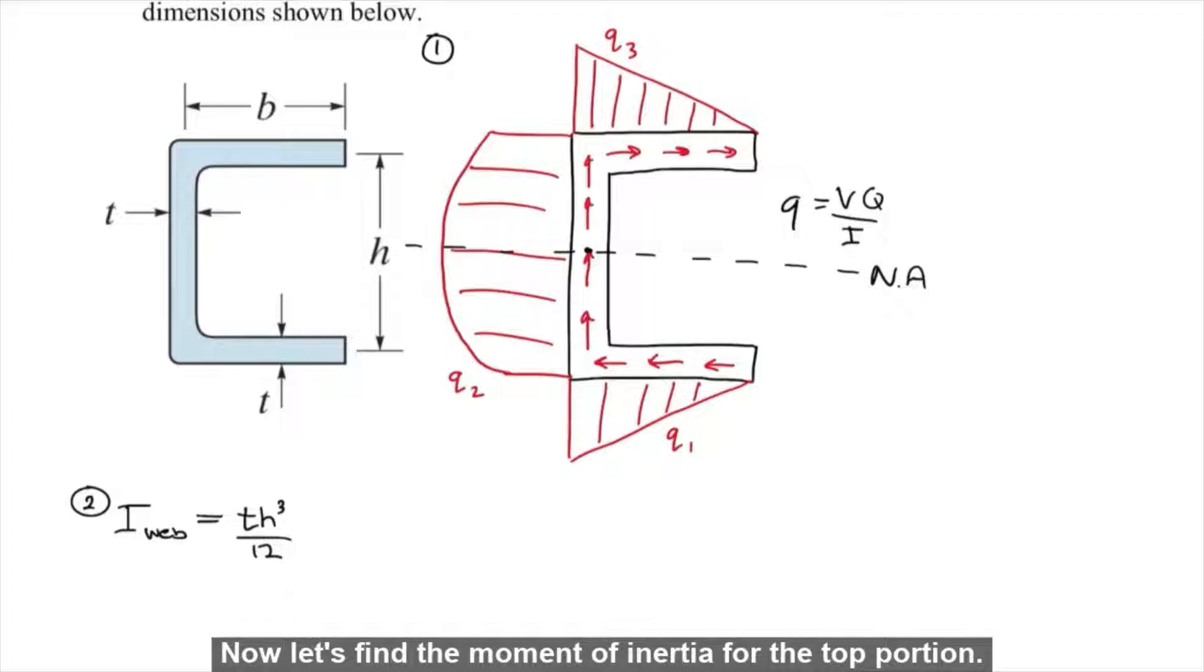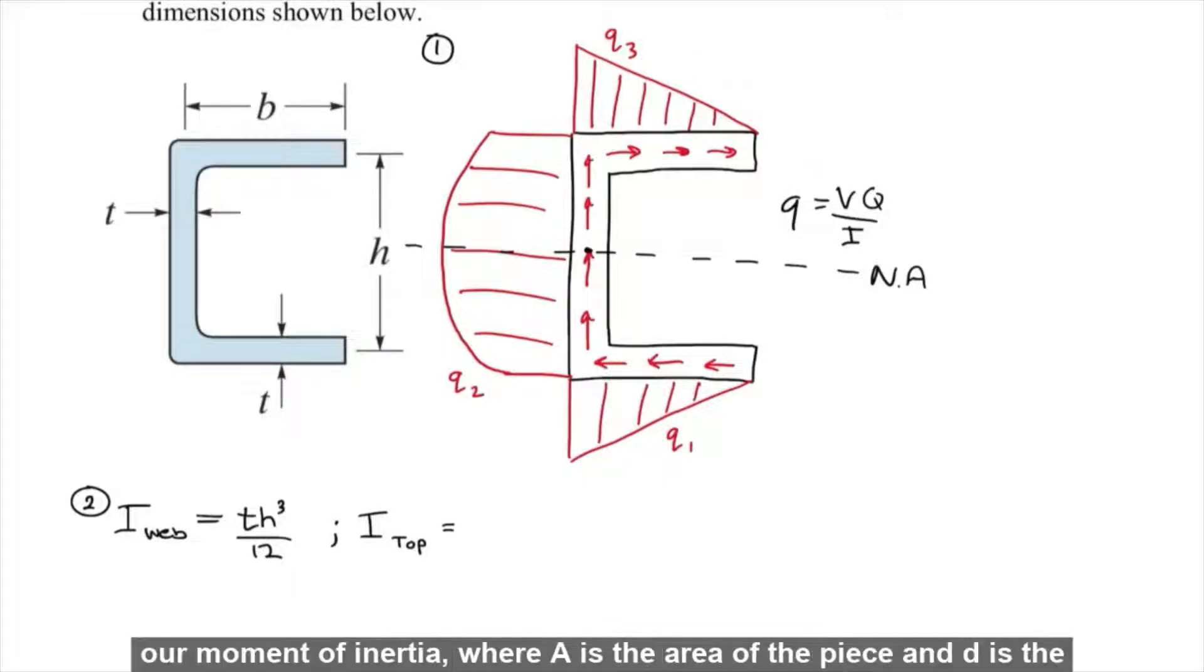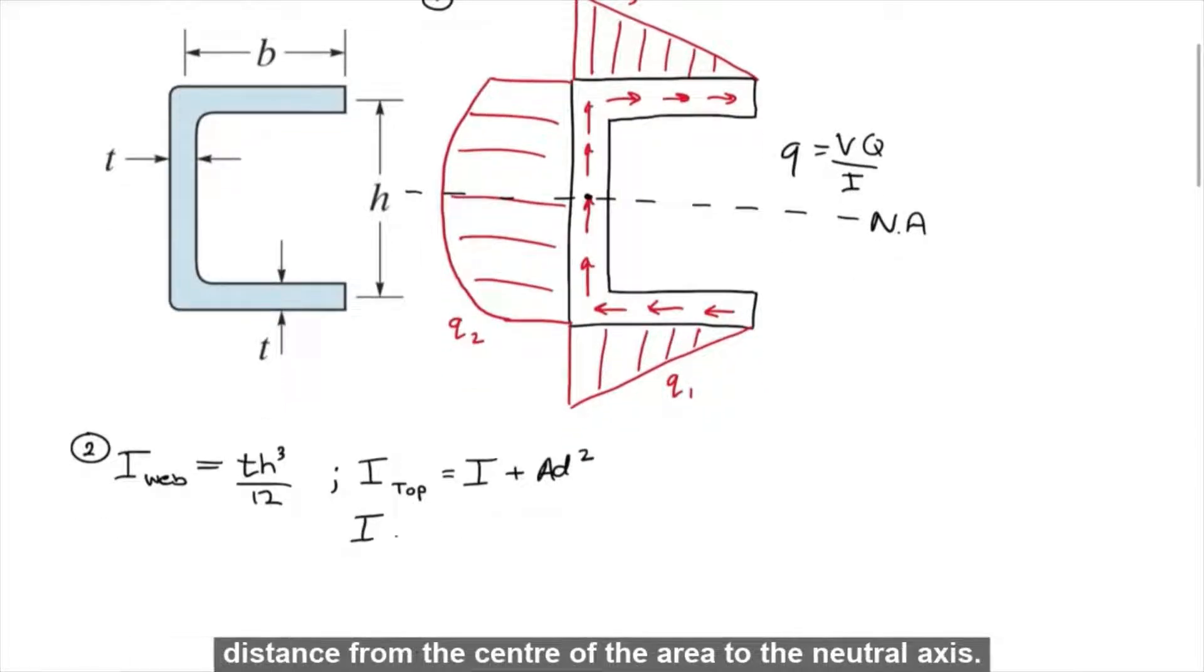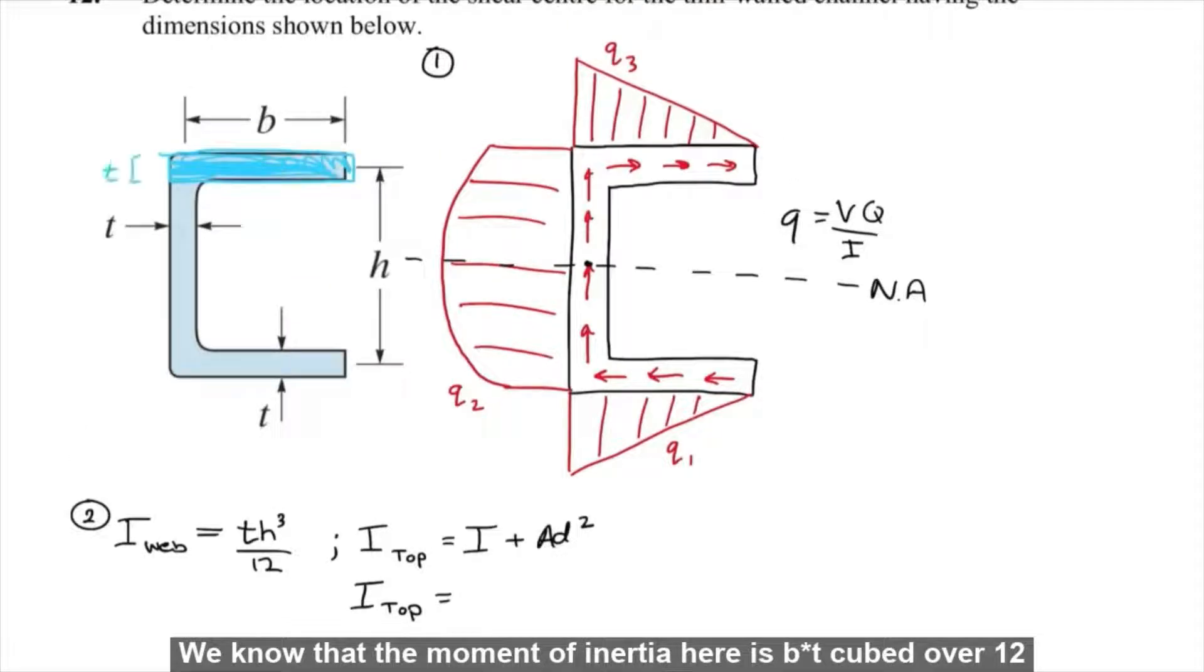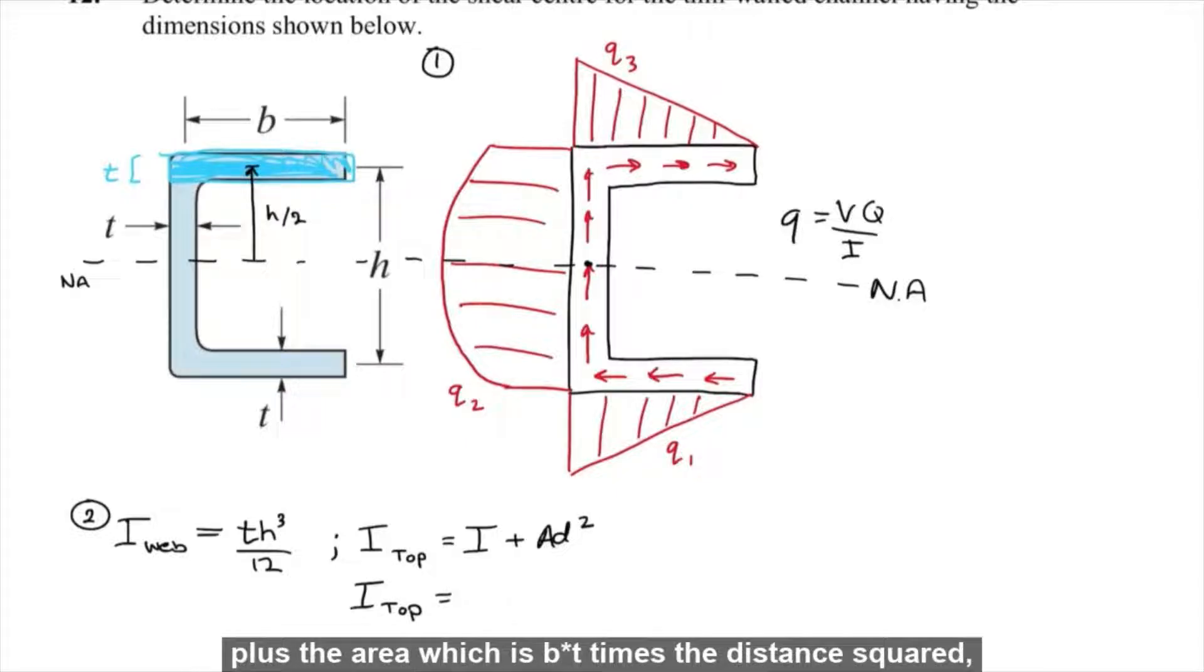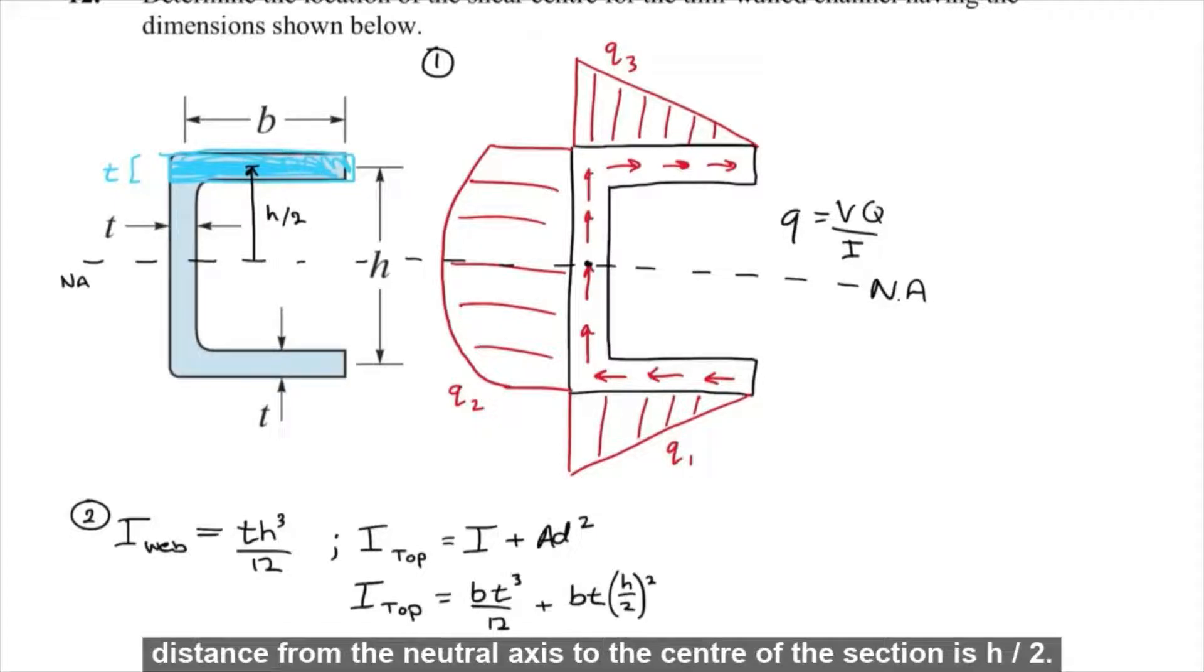Now let's find the moment of inertia for the top portion. Since this section isn't symmetric along the neutral axis, we have to add A times D squared to our moment of inertia, where A is the area of the piece and D is the distance from the center of the area to the neutral axis. We know that the moment of inertia here is BT cubed over 12 plus the area, which is B times T, times the distance squared, which is H over 2 squared, because the distance from the neutral axis to the center of this section is H over 2.